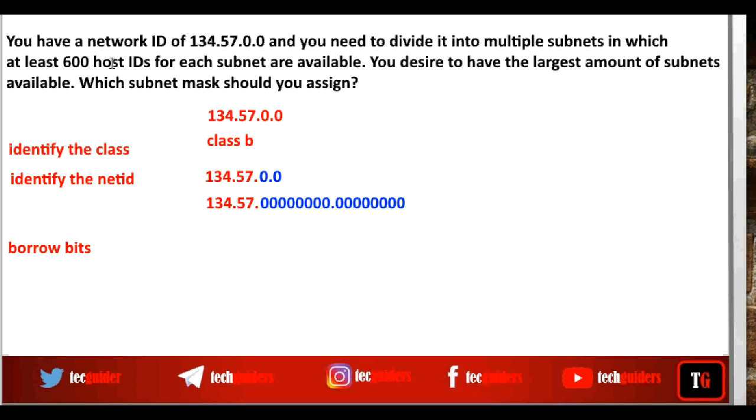Each subnet should support at least 600 hosts. If we have 10 bits in the host ID part, then the total number of IP addresses available for that subnet is 2 power 10. Among them, two addresses are reserved. One for network address, one for directed broadcast address. Remaining there are 2 power 10 minus 2 addresses to address the hosts, which is equal to 1024 minus 2, 1022.